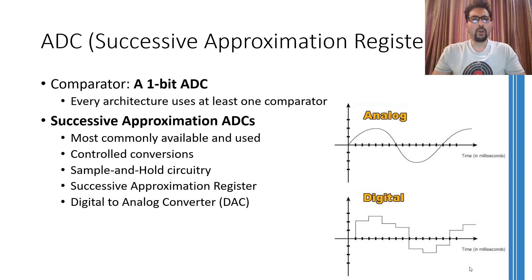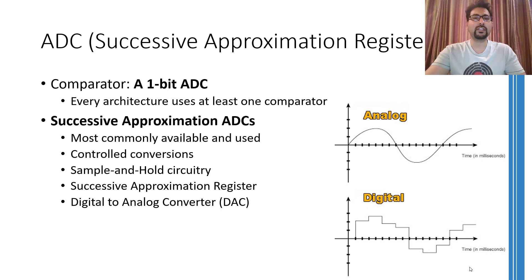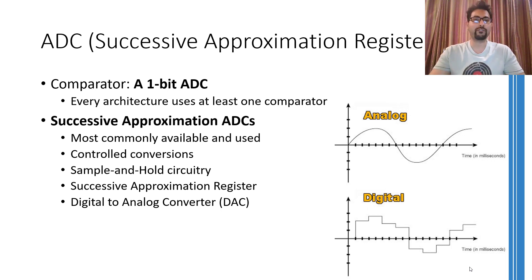The main components that make up this kind of ADC include a timing circuit that is used to control the conversion, a sample and hold circuitry that is used to hold the analog input for the time during which the ADC is working, a successive approximation register that stores the current value of the output, and a digital to analog converter.